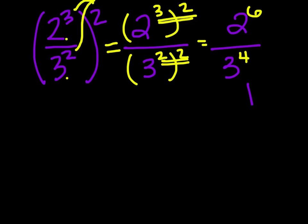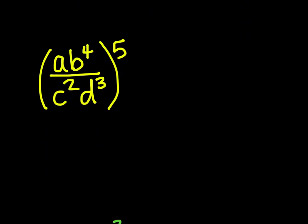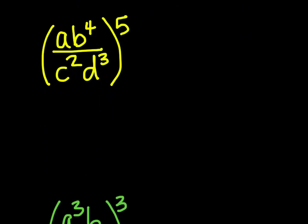This is its base simplified form, but from here we could also compute 2 to the sixth and 3 to the fourth to get a numeric answer. Next problem: we have a times b to the fourth over c squared times d to the third, and that whole quotient is raised to the fifth power.